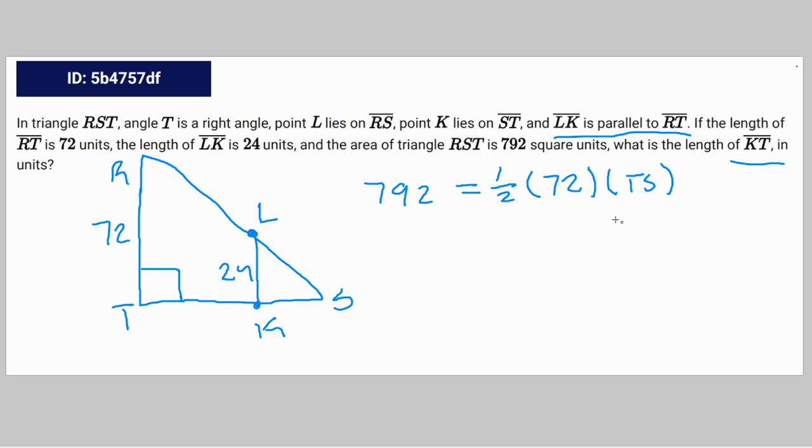We're going to start with finding TS first. So 792 equals 36 TS. TS equals 22. So this entire thing equals 22.